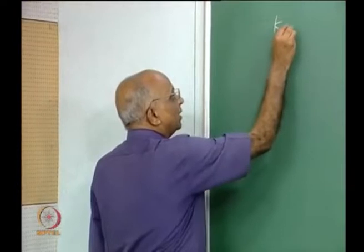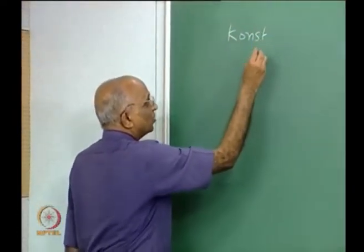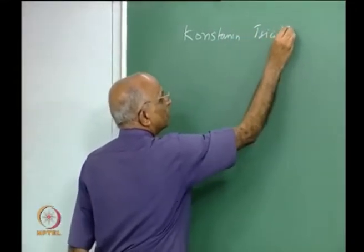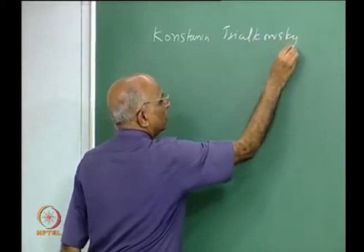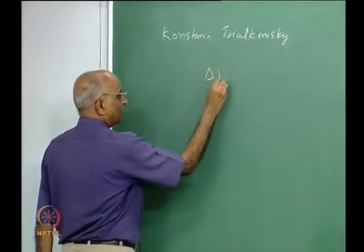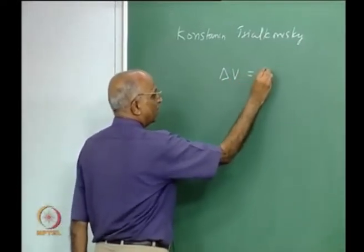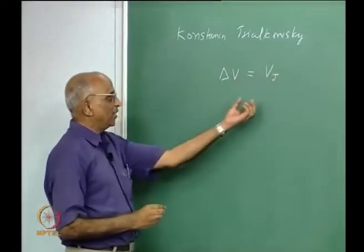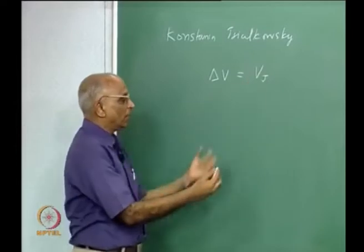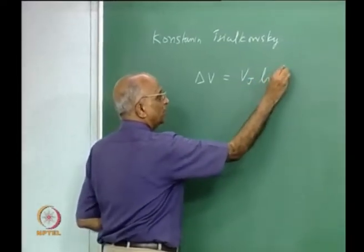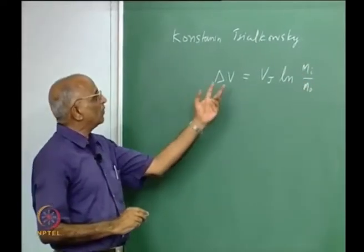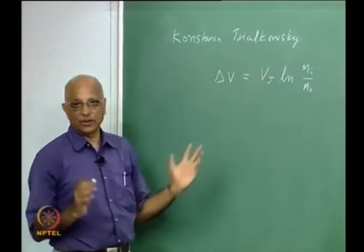We talked in terms of the Russian school teacher — Konstantin Tsiolkovsky. We told ourselves he derived the rocket equation. We derived it in class. The ideal velocity given by a rocket is given by the efflux velocity or jet velocity — the velocity with which gases leave the rocket — and the logarithm of the initial mass divided by the final mass. This is Tsiolkovsky's equation, or the rocket equation.